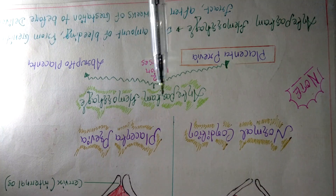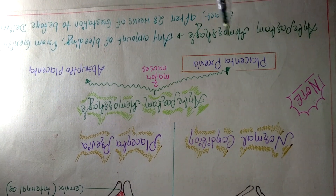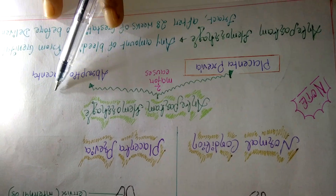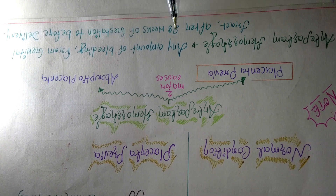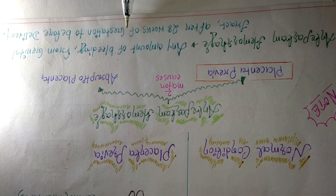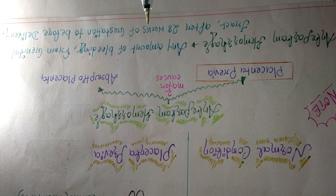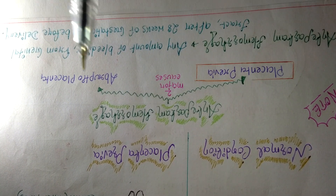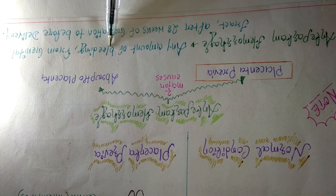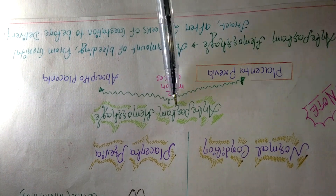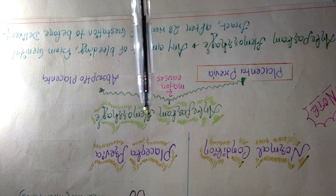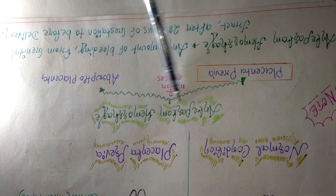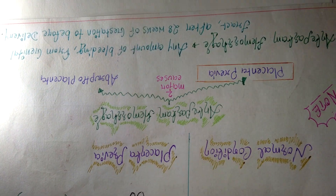Now let me explain antepartum hemorrhage. Antepartum means before delivery. Antepartum hemorrhage is any amount of bleeding from the genital tract after 28 weeks of gestation and before delivery. Antepartum hemorrhage has two major causes: placenta previa and abruptio placentae. So placenta previa is one of the major causes of antepartum hemorrhage.